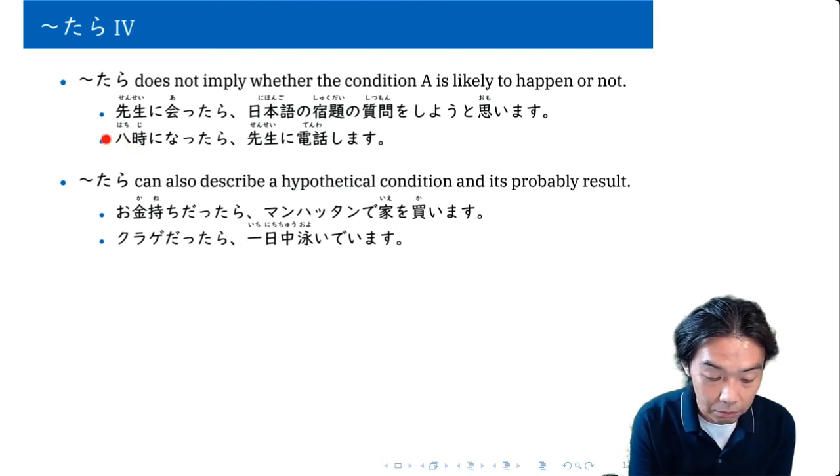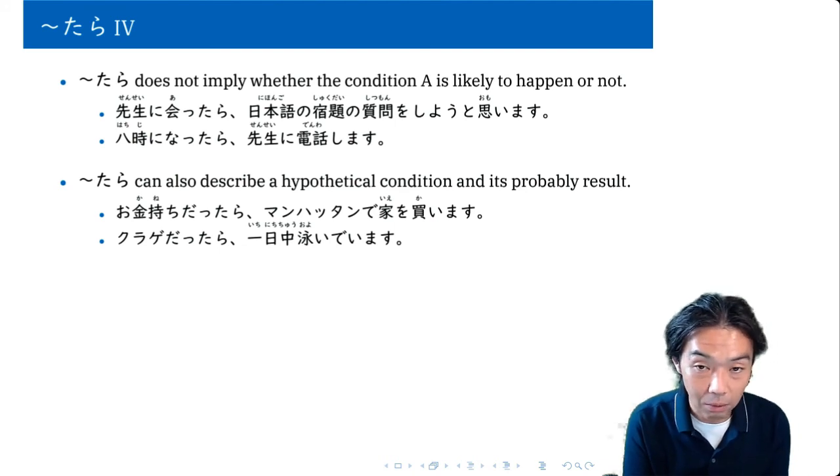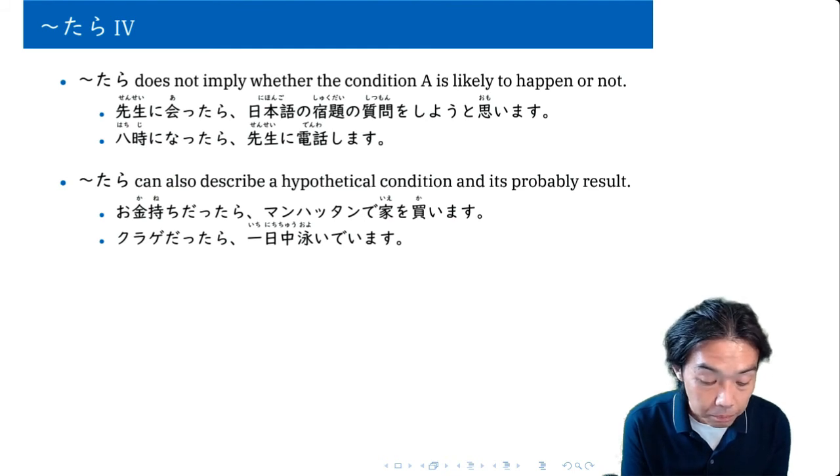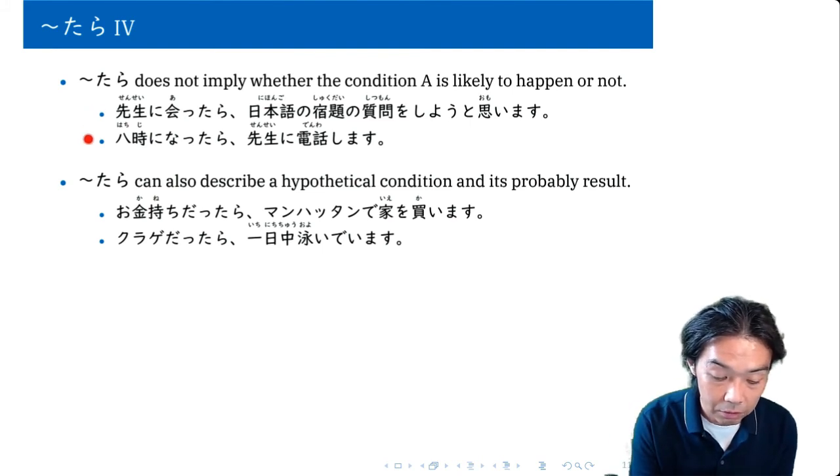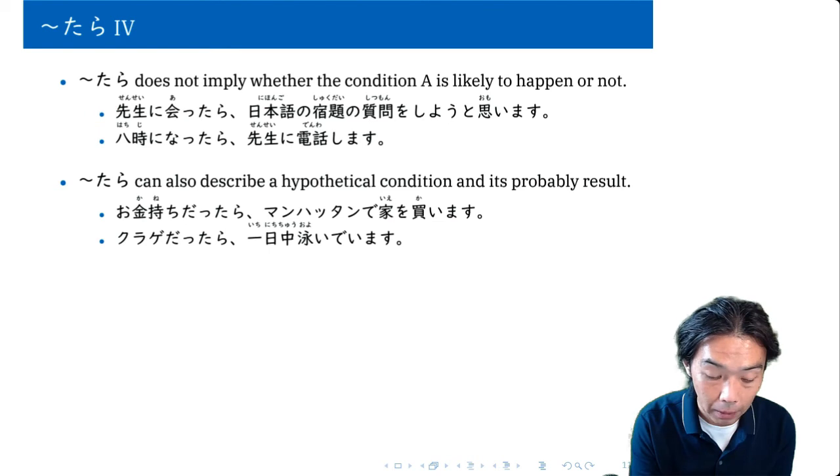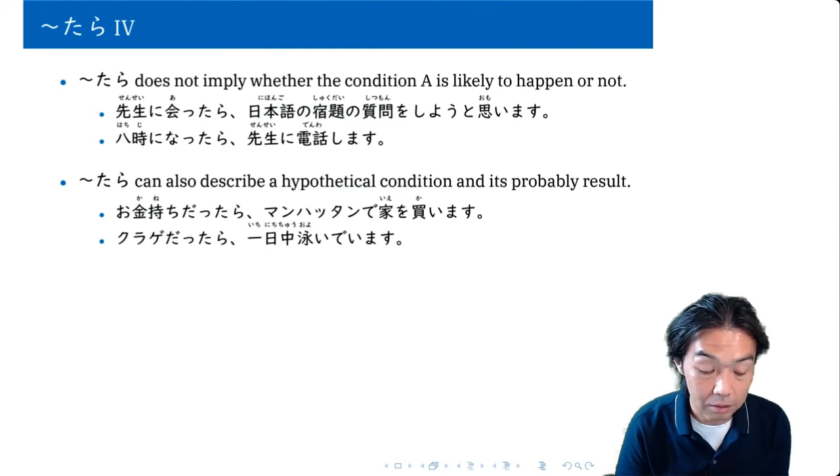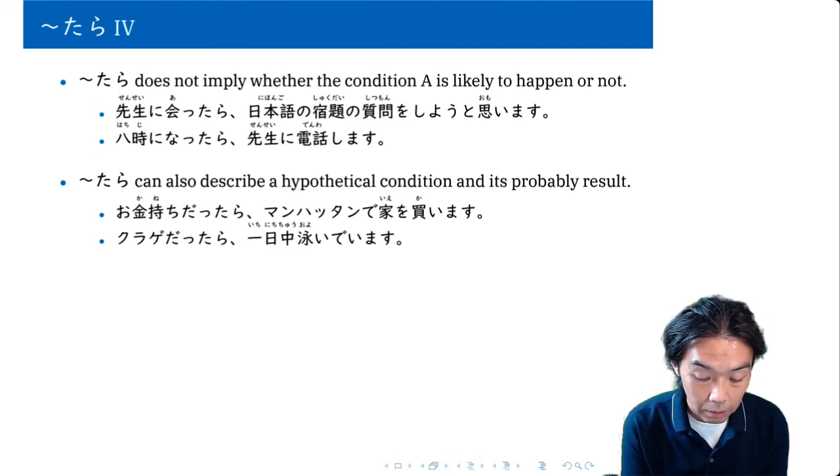So you see that it always happens, right. So it's impossible that the time reaches eight o'clock. So this happens all the time but you can still use Tara. So these two are quite different. The first one may or may not happen, the second one always happens. But you can still use Tara because Tara is the most neutral conditional.